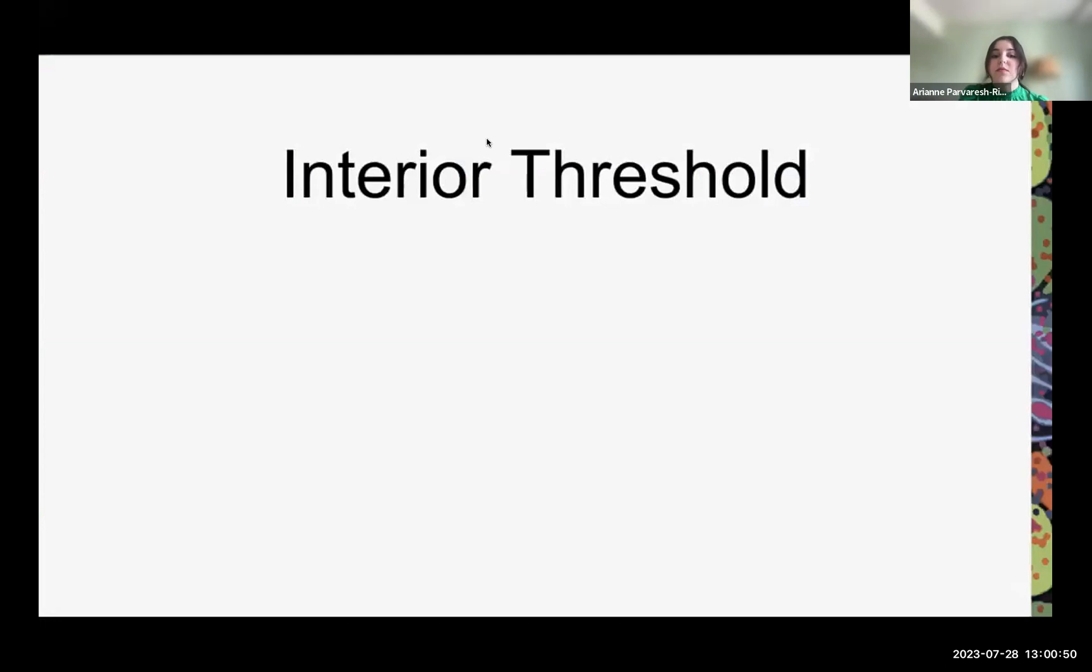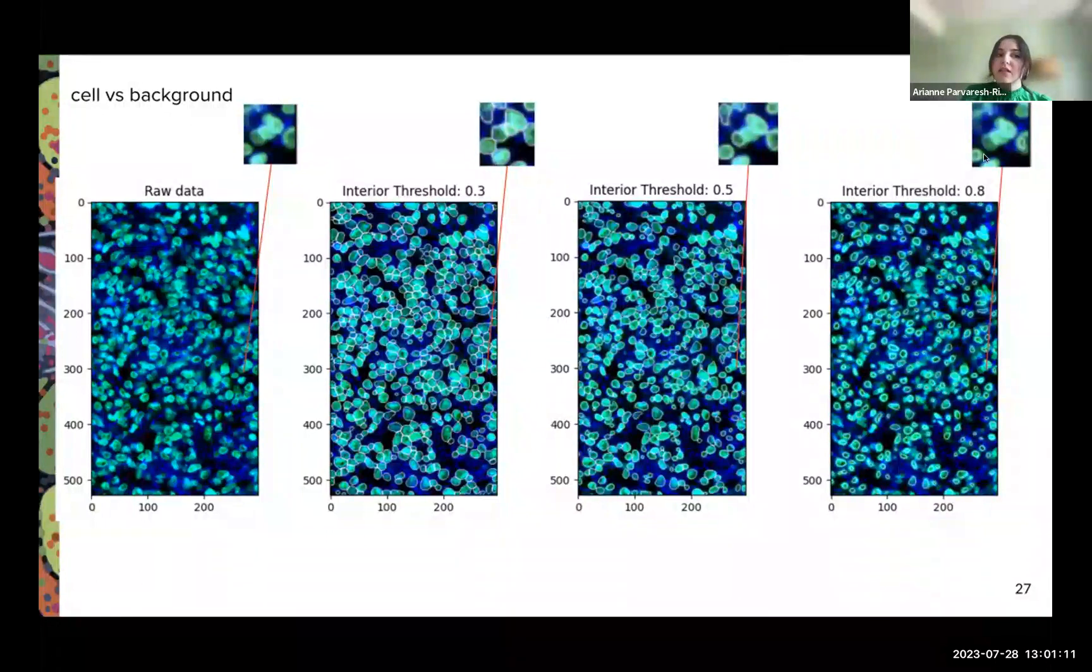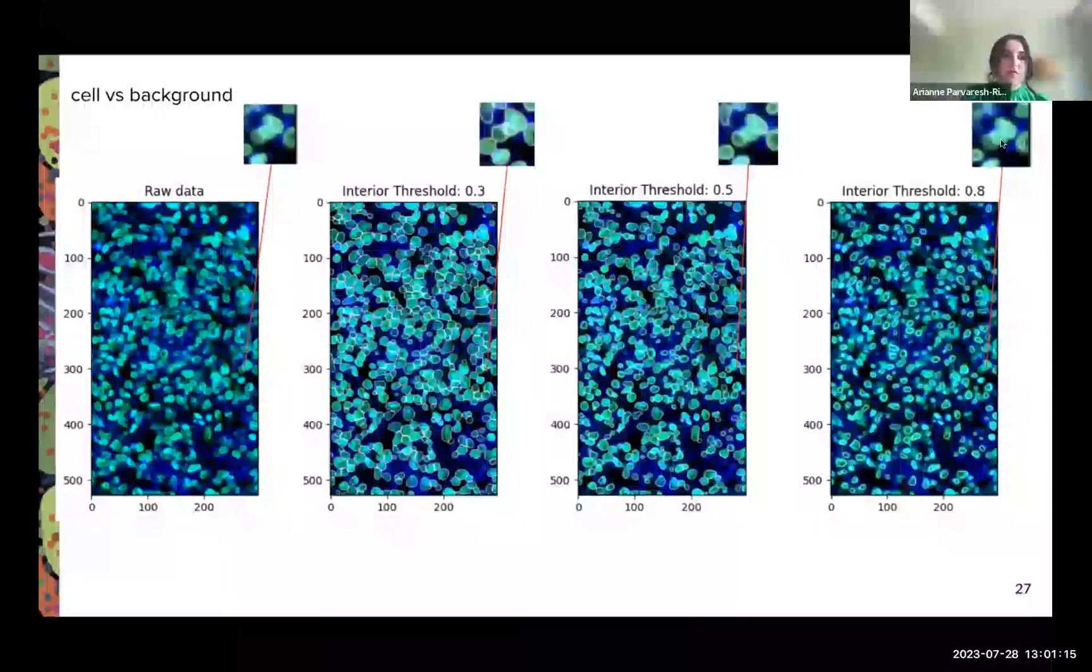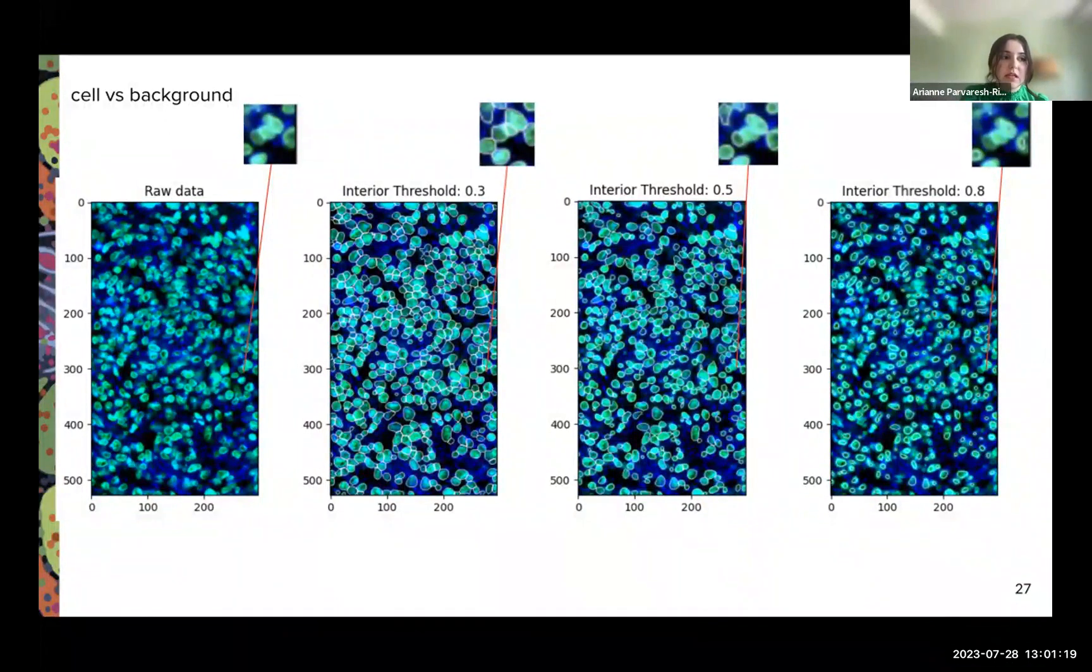The next parameter is the interior threshold, which basically controls how conservative the model is in estimating what is a cell versus a background. Lower values of interior threshold result in larger cells and smaller values result in smaller cells. This is detecting what is a cell versus a background. At higher values, there are rarely any segmentation. As the values decrease, there is more conservative segmentation.